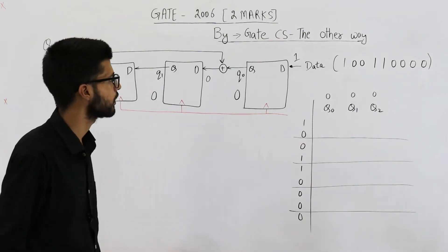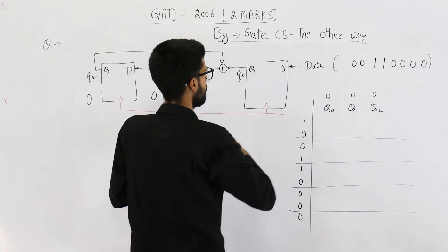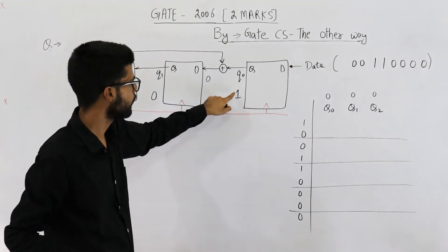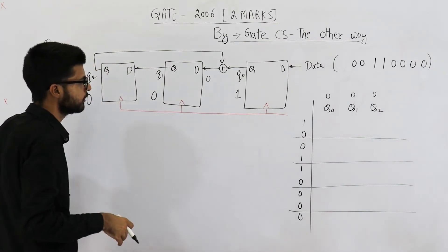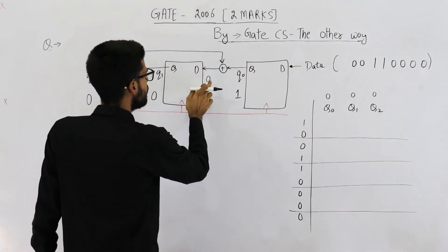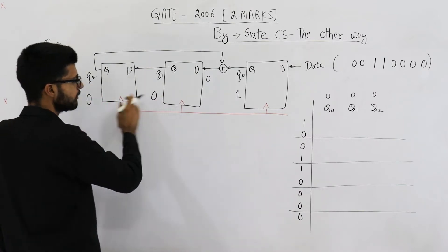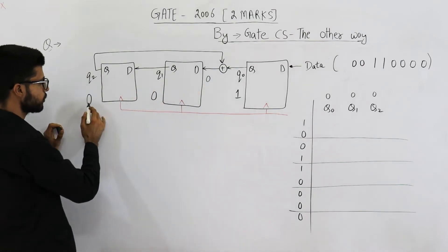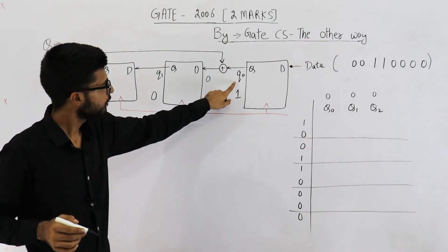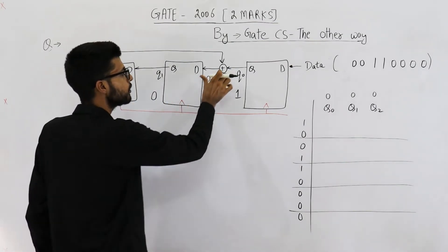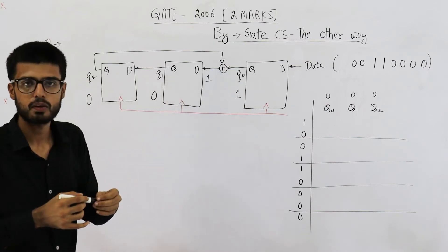Now suppose we give the first clock cycle. This input '1' will be transferred to Q0. This bit is consumed and transferred here. Now 1 will remain at Q0 until the next clock cycle — the flip-flop maintains its output until the next clock. The D input of the next flip-flop is 0, so that 0 is transferred to Q1, and similarly 0 is transferred to Q2. Now let's see the output of the XOR gate: Q1 is 1, Q2 is 0, so 1 XOR 0 is 1. This value changes to 1, but the flip-flop won't react until the next clock cycle.